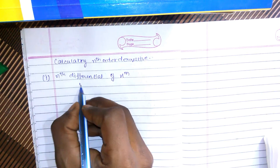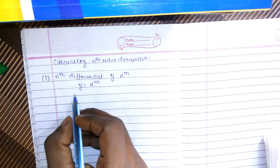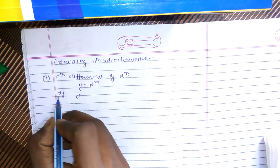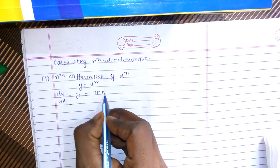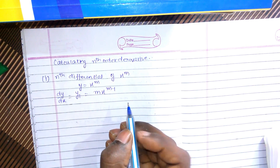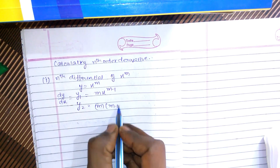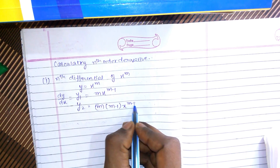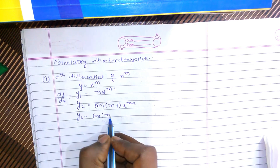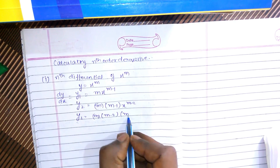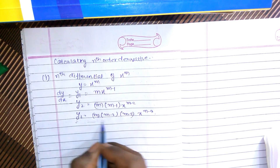Let y be equal to x raised to power m. The first differential y1 or dy/dx would be m times x raised to power m minus 1. Then y2 would be m(m−1) x raised to power m minus 2. And y3 would be m(m−1)(m−2)(m−3) x raised to power m minus 3, and so on.